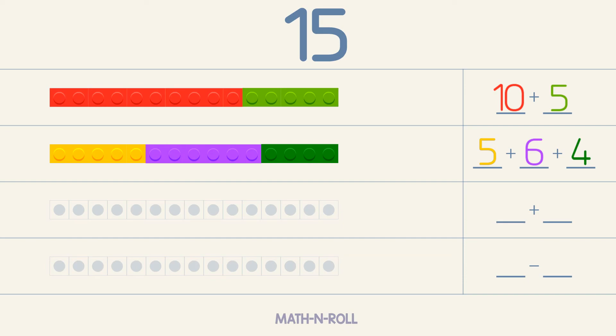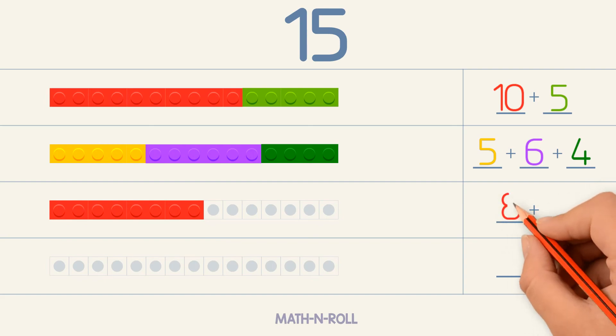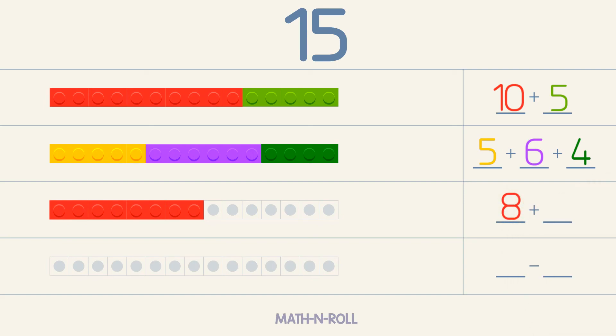Now let's make 15 by adding 2 numbers. For the first number, we can pick anything less than 15, for example 8. To make 15, we need 7 more pieces. So 8 plus 7 equals 15.